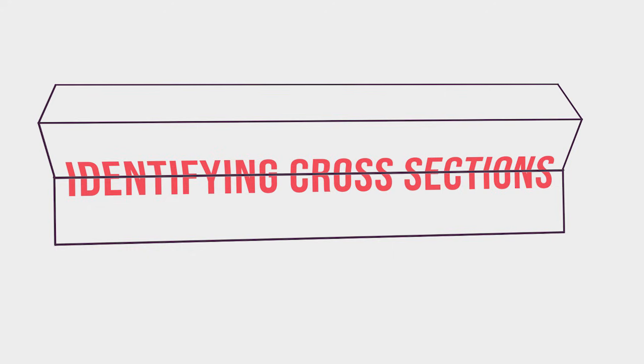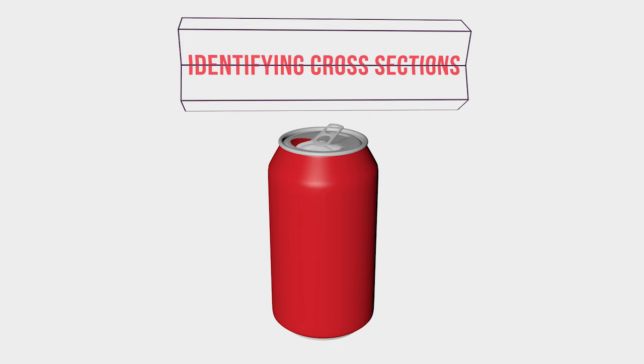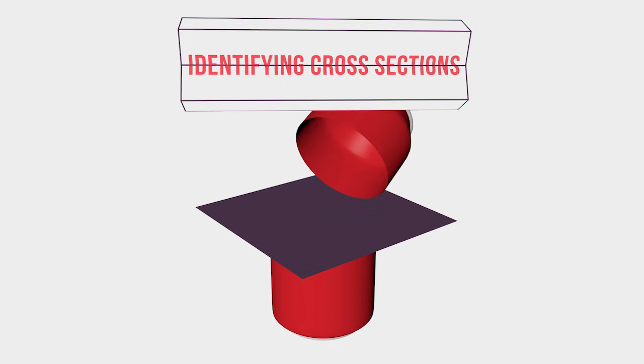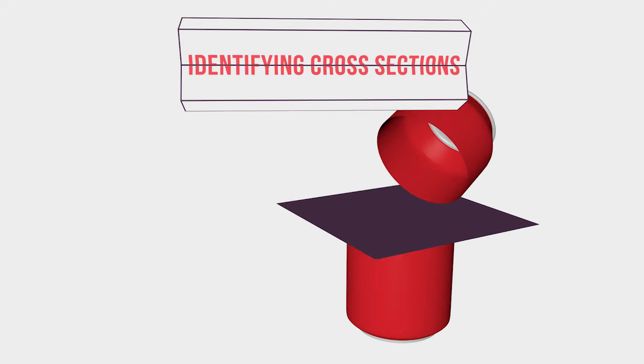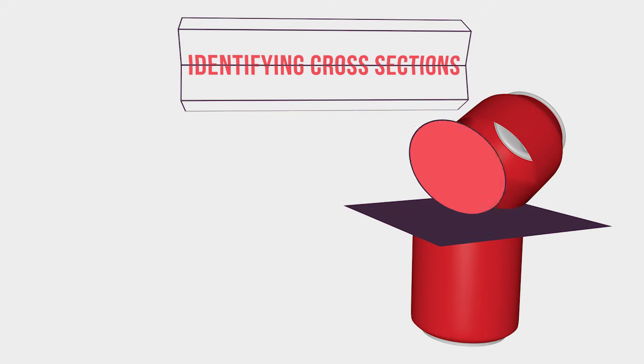Now look at a few examples of determining cross sections of three-dimensional figures. If you are given a can of soda, which is a cylinder, and you were to cut this can parallel to the base, what two-dimensional shape would you form? The cross section would form a circle.